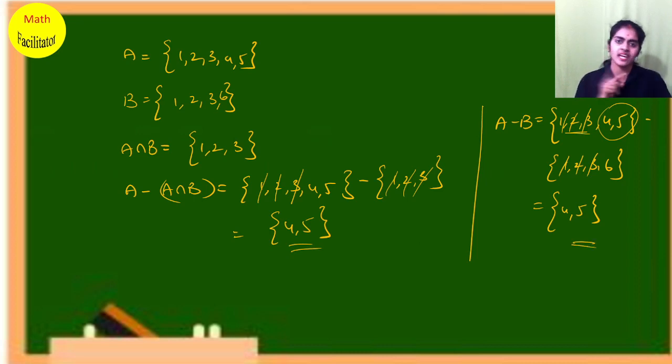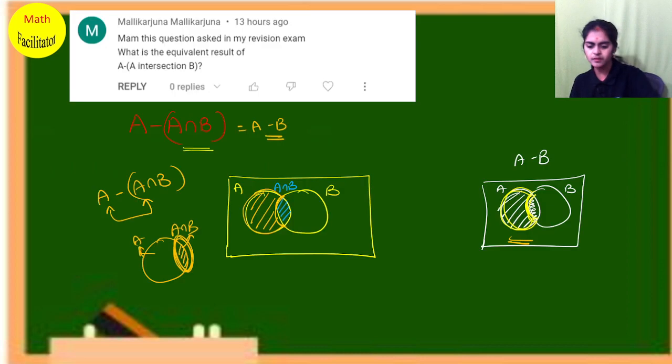You can see these two are equivalent. A minus A intersection B equals A minus B. This is shown with both an example and a Venn diagram.